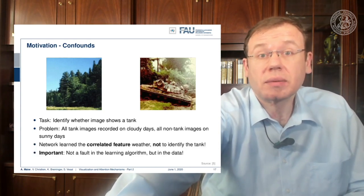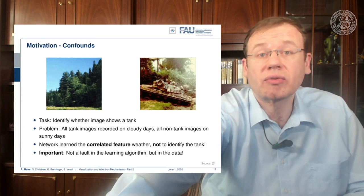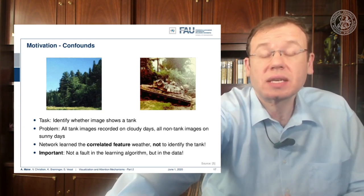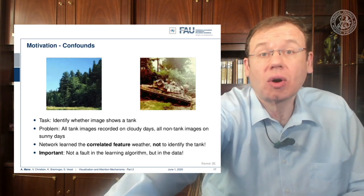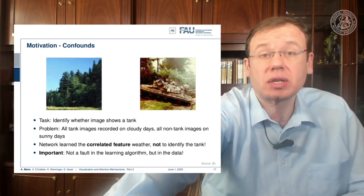We can summarize this: the network simply learned the weather as a correlated feature — this is typically called a confounding factor — and did not identify the tank. The important lesson here is this is not a fault in the learning algorithm but in the data. When you go out and collect your data, you should be extremely careful that you have representative data of the future application.